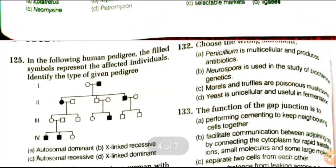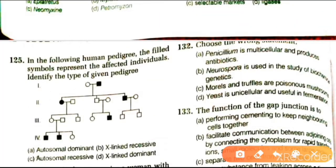Next question: choose the wrong statement. Penicillium is multicellular and produces antibodies — sahih hai. Neurospora is used in the study of biochemical genetics — also correct. Morals and truffles are poisonous mushrooms — this is wrong, because morals and truffles are edible mushrooms. Yeast is unicellular and useful in fermentation.